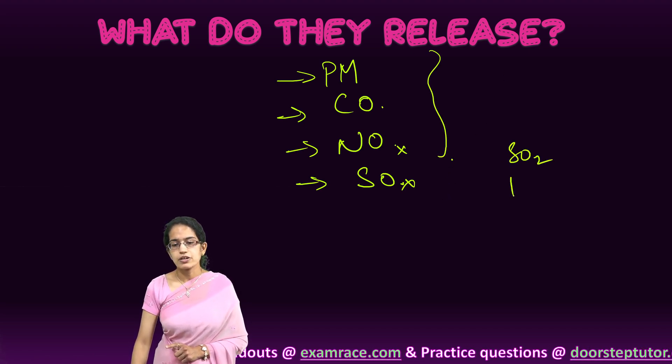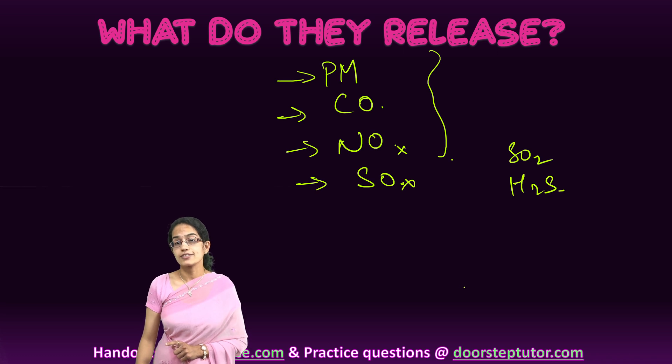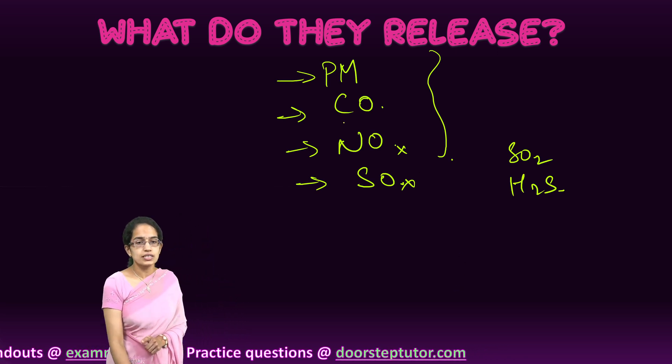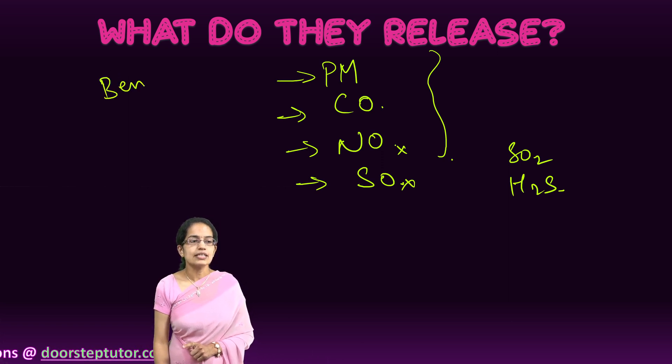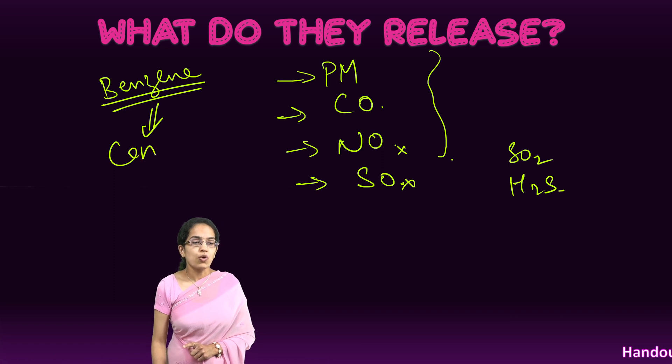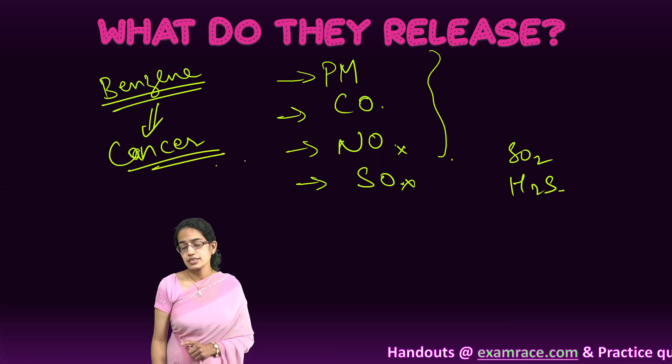Within sulfur there is sulfur dioxide and hydrogen sulfide that is commonly seen as a result of the emissions from BTEX compounds. Within BTEX, benzene is considered as a carcinogenic compound. The problems related to it are leading to cancer, diseases like cancer.